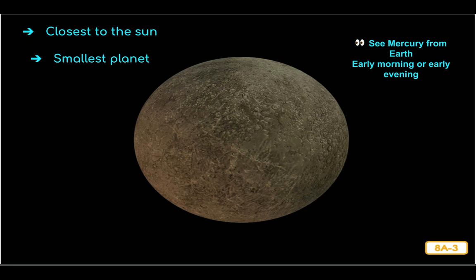Most of the planets in the solar system are named after Roman gods and goddesses. The planet Mercury is named after the Roman god Mercury. In mythology, the god Mercury was very fast, so it makes sense that this planet is named after him. It takes just 88 Earth days for Mercury to complete a revolution around the Sun, so it is a quick little planet. Remember that Earth takes 365 days to orbit the Sun — so which planet is faster?